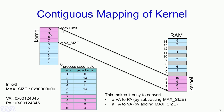Another thing to notice is that there is a contiguous mapping between the kernel addresses in the virtual space of the process to the corresponding physical frames in which the kernel gets mapped into. For instance, the kernel blocks 7, 8, 9 and 10 get mapped into the contiguous page frames 1, 2, 3 and 4. Why is this contiguous mapping used? One most important aspect is that given this contiguous mapping, it is easy for the kernel to make conversions from virtual address to physical address and vice versa.